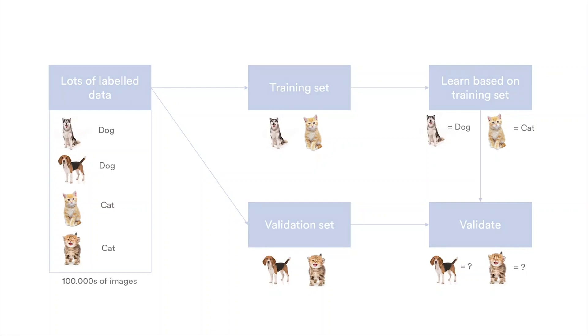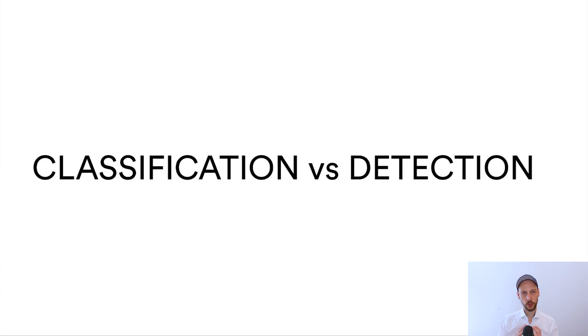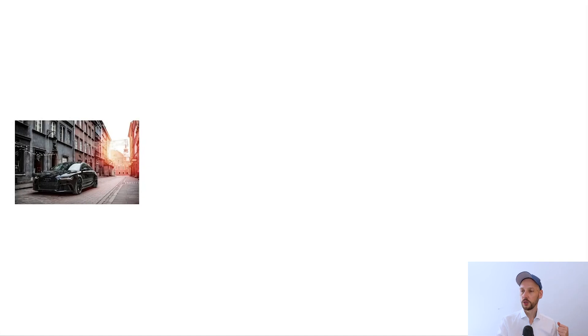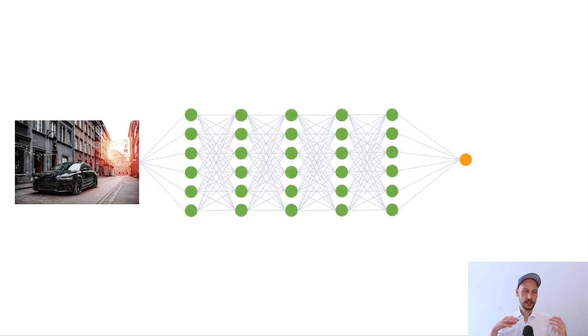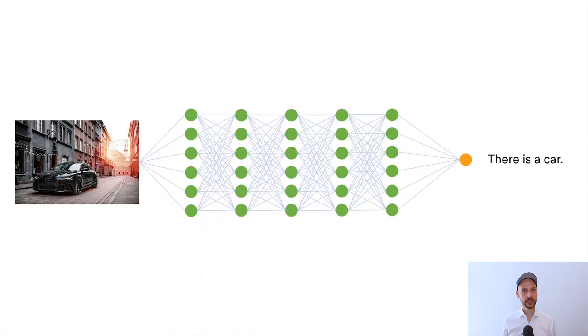For inferencing, I want to make sure we understand two different concepts used in our industry that are very different: classification and detection. Let's go into classification, because that's the traditional thing you do with deep learning. You take an input image that might come from a surveillance camera, you feed it into the network — a neural network that is basically a graph or tree making decisions based on what you trained it on — and at the output it tells you, for this image, there is a car. But that's a classification: all it tells you is there is a car in the image. It doesn't tell you where the car is, it doesn't tell you if there's more than one car.